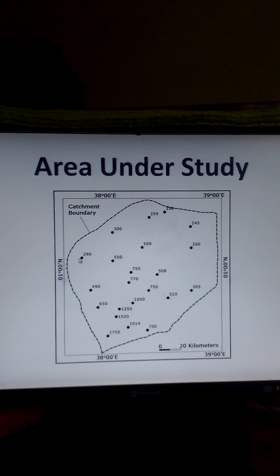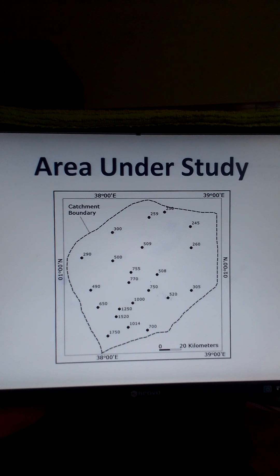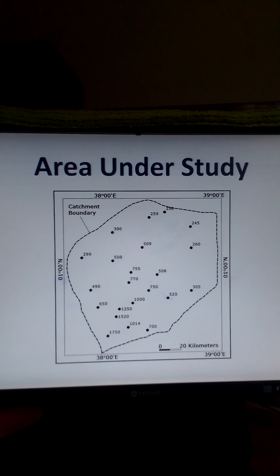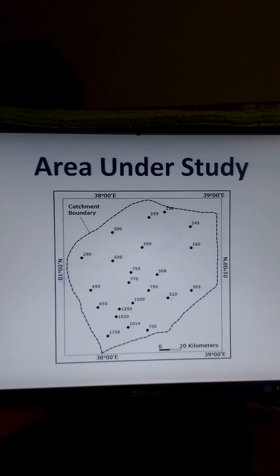So we have a rain gauge here, another one here, and so on. At each rain gauge location, you indicate the recorded value of rainfall amount. At this rain gauge we have the rainfall amount as 290 millimeters, at this location 300 millimeters, and at this location the rainfall amount is 1,750 millimeters.